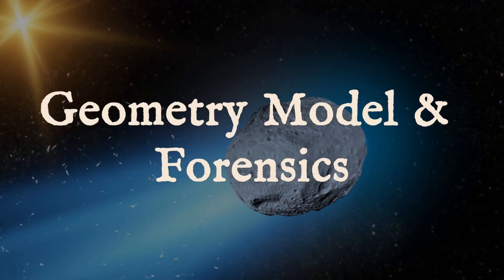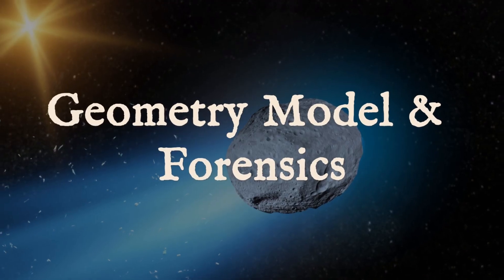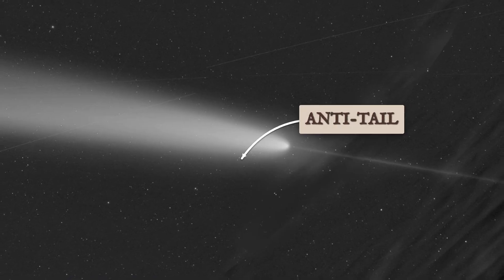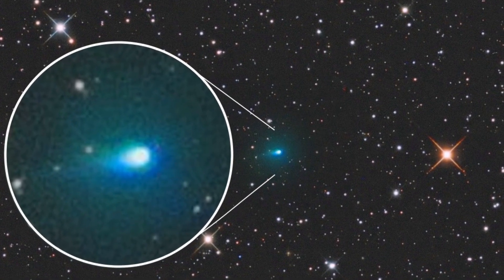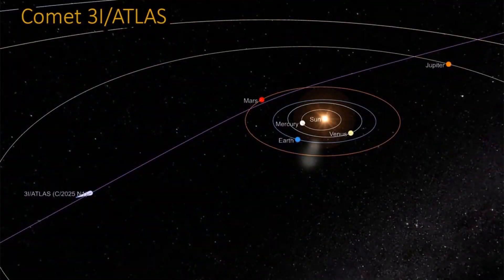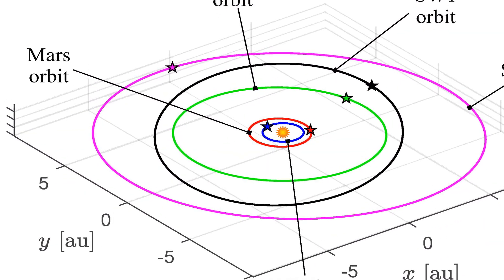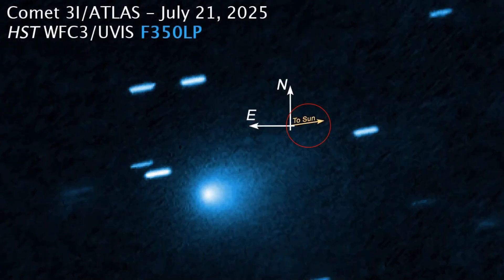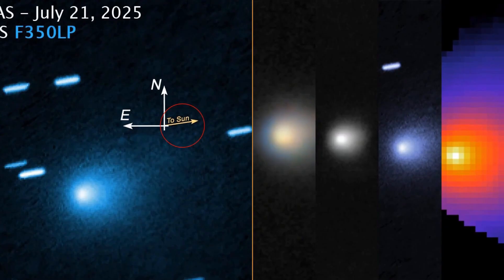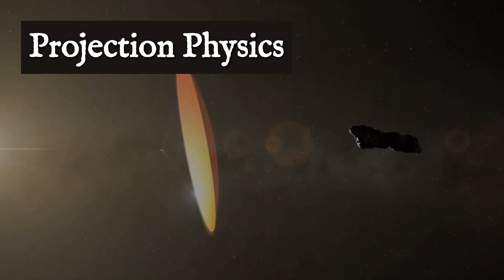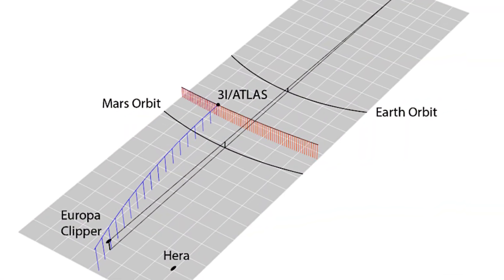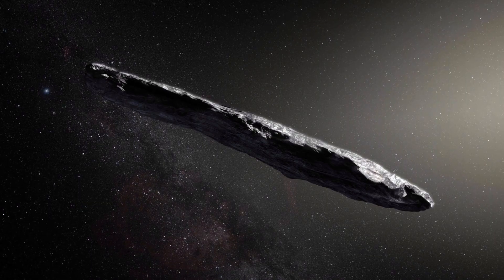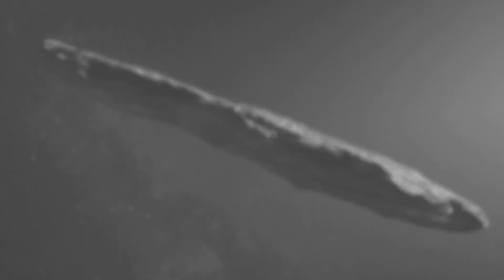Mainstream comet scientists point to a simple cause for the tail flip: geometry. The anti-tail of 3i/Atlas was never a separate structure, but a sheet of dust trailing in the comet's orbital plane. As Earth moved through this dust plane in late September, our line of sight changed. From one side, the dust appears to spike toward the sun. From the other, it stretches away like a classic tail. This projection effect is well modeled in comet science and matches the timing of the observed flip. No unusual physics or exotic materials are required. Just the right angle.